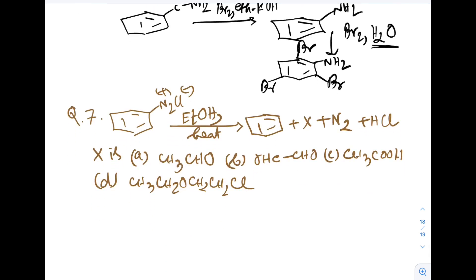Question 7. Benzene diazonium chloride is heated with ethanol. We get benzene plus compound X plus N2 plus HCl. What is X? Look at the reaction - from benzene diazonium chloride, N2Cl group is removed and 1H is inserted, giving benzene. Since H is inserted, reduction is happening.